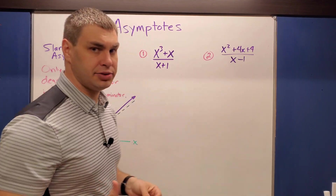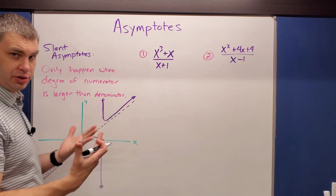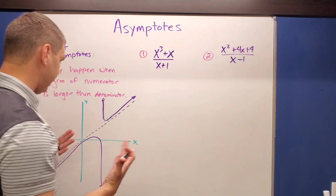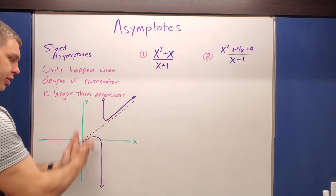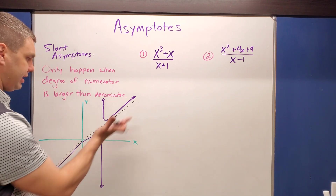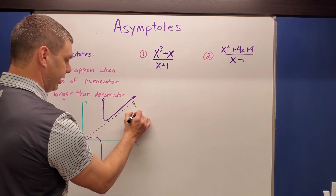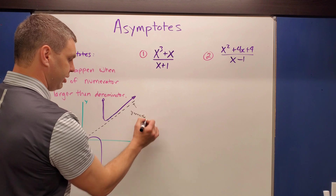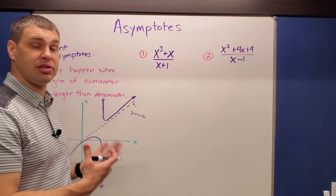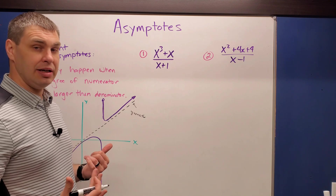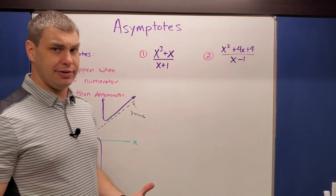Slant asymptotes only occur when the degree of the numerator is larger than the denominator. The asymptote is slanted — neither vertical nor horizontal — and since it's a line, it can always be written in the form y equals mx plus b. We have to check for slant asymptotes in this case; they're not always present, but when they are, they'll be linear.